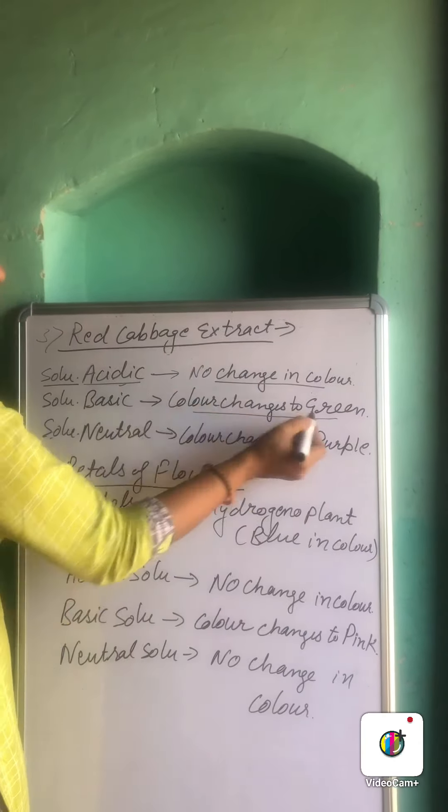Now we are going to start with the olfactory indicators, the third type. With the help of these, different types of smell are used to indicate whether a substance is acidic, basic, or neutral. As an olfactory indicator, we can use onion extract. Onion juice has a very pungent smell. When added to the acidic solution — for example, hydrochloric acid — the smell remains the same, with no change. When onion extract is added to the basic solution — for example, NaOH (sodium hydroxide) — the smell gets destroyed and disappears, so we can say the solution is basic.